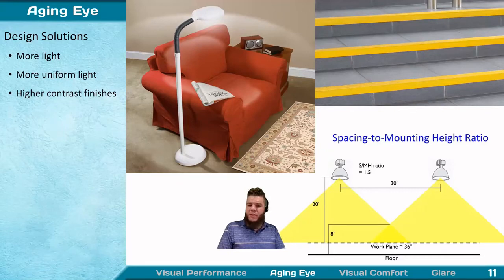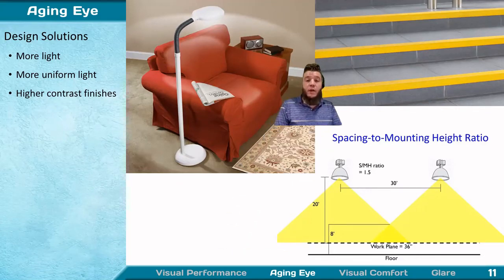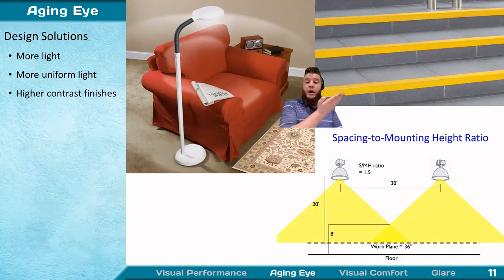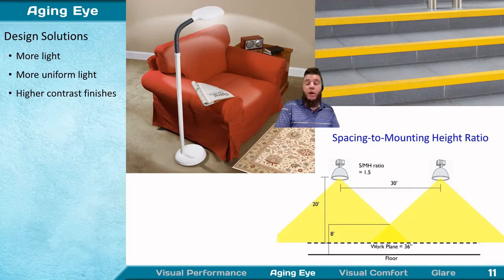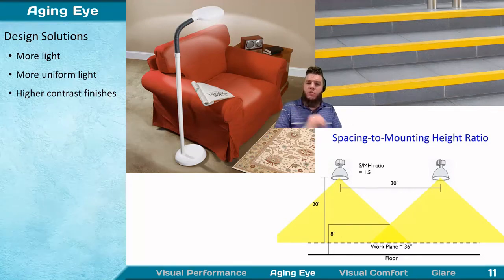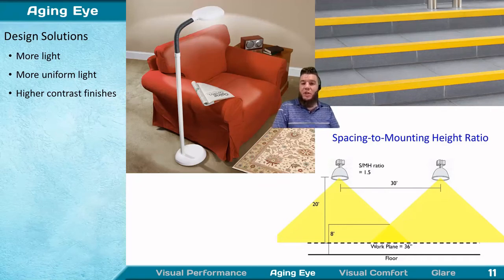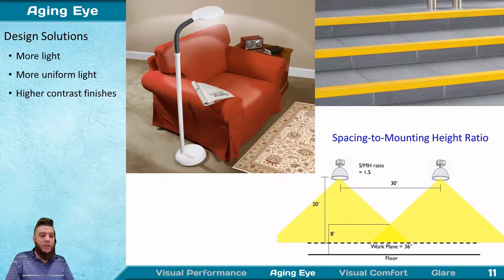Less of a lighting design consideration, but still important, are the architectural finishes in your space. You can do a lot to increase contrast of objects themselves by providing higher contrast finishes. Things like caution tape to highlight hazards can go a long way. You can also reinforce this with lighting by highlighting steps, though it's far easier and cheaper to do that with your finishes.